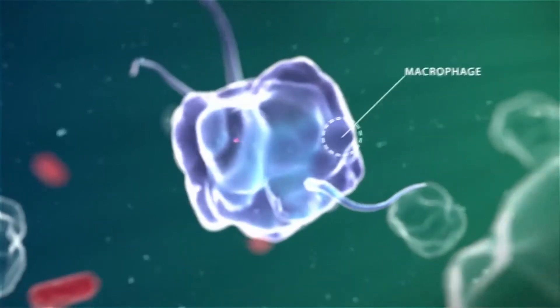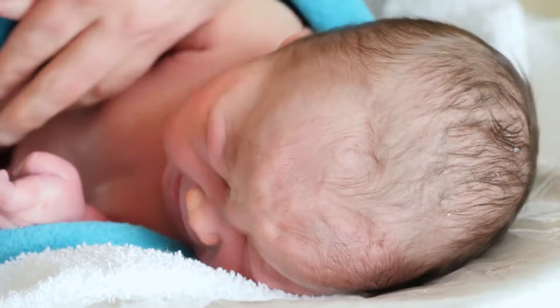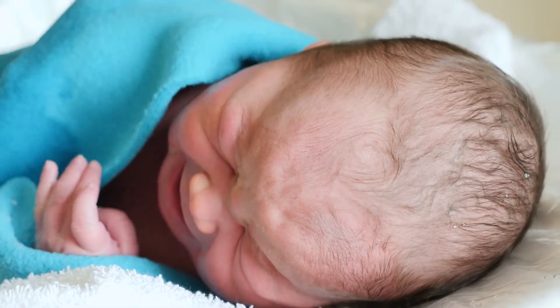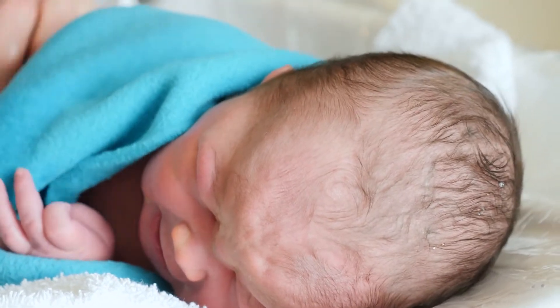The innate immune system is inherited and is active from the moment you're born. When your system recognizes an invader, it goes into action immediately.